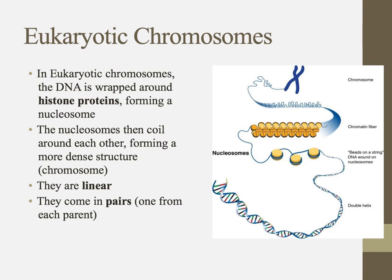On the contrast, eukaryote chromosomes are quite different. First of all, they are wrapped — the DNA is wrapped around these histone proteins. Those histone proteins form nucleosomes. They then condense upon each other to form a chromatin fiber. During prophase of mitosis, that chromatin fiber is going to supercoil and condense into these chromosome structures. Instead of being a single loop, these chromosomes are linear, and they all come in pairs, one from each parent.